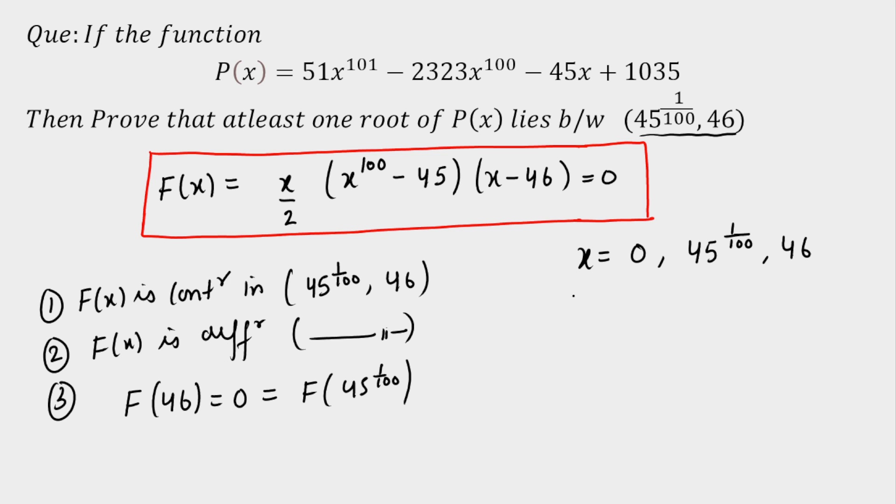Now these three are the conditions of Rolle's theorem, and using Rolle's theorem, can I say that there exists a c value belongs to 100th root of 45 to 46 for which F'(c) will be 0.